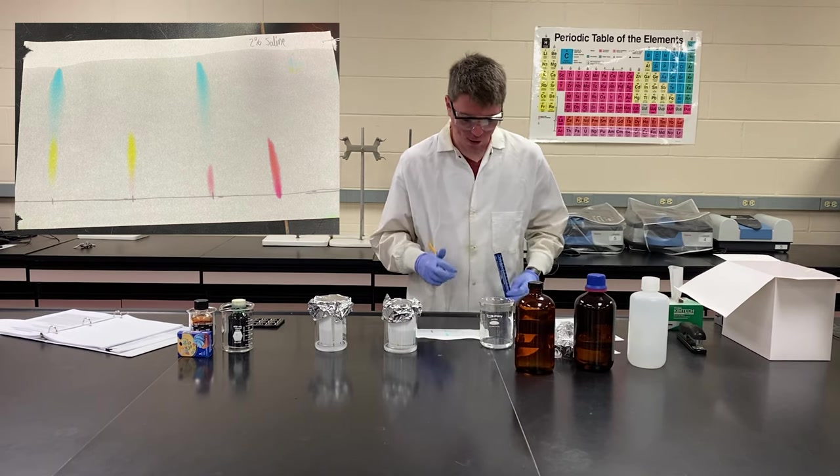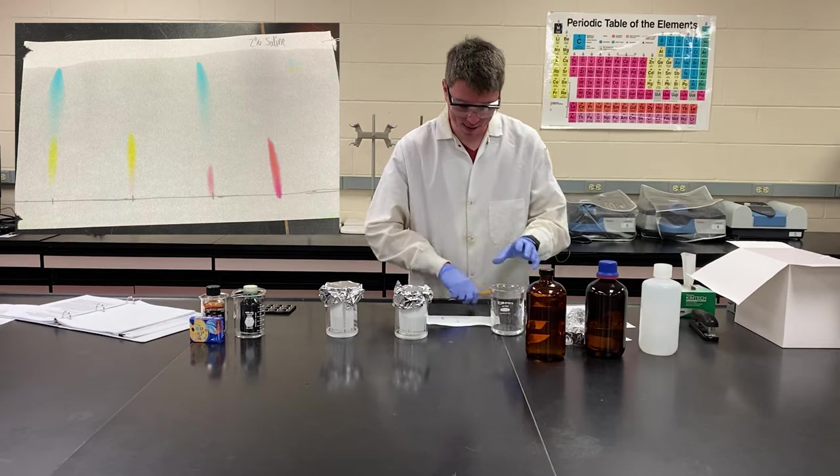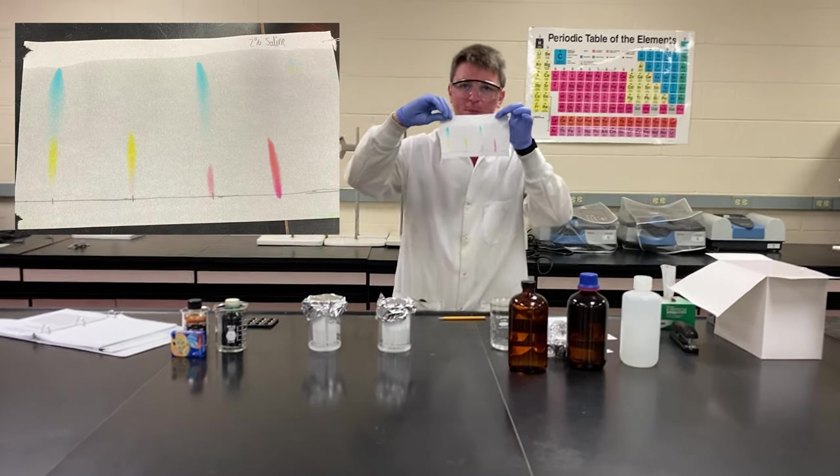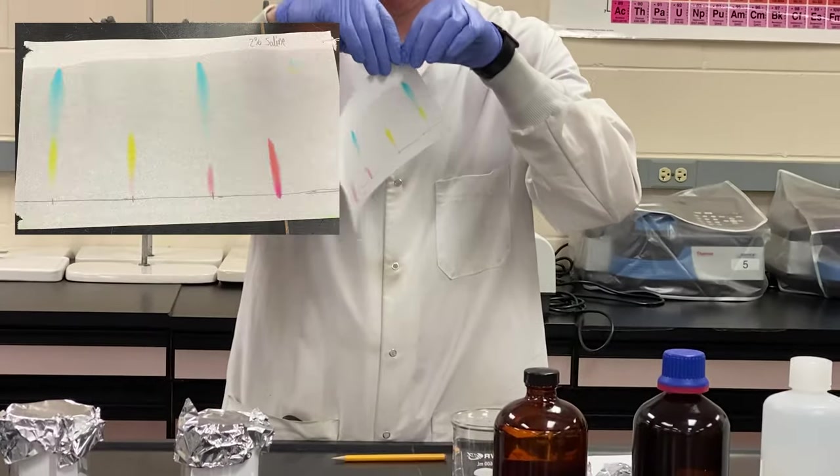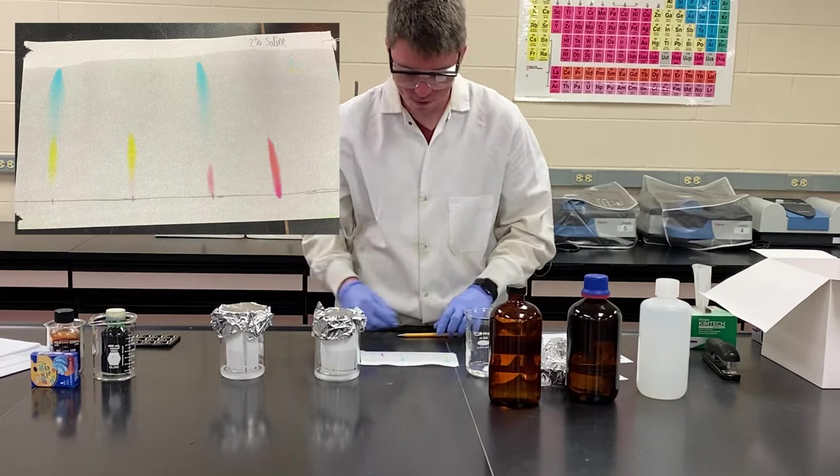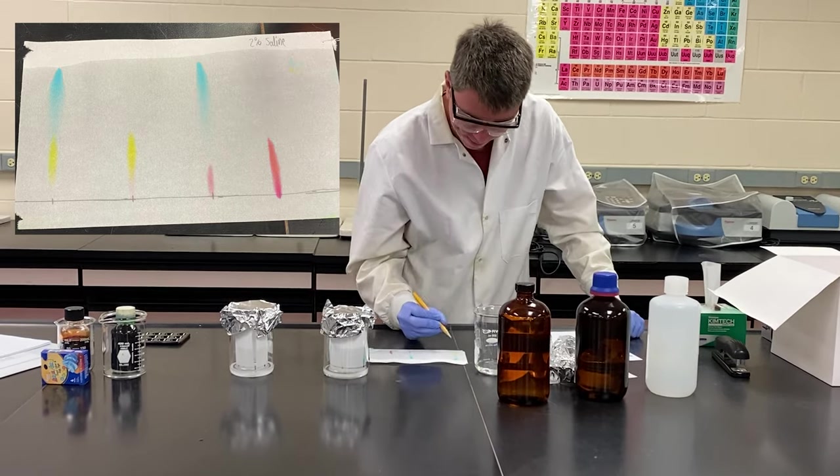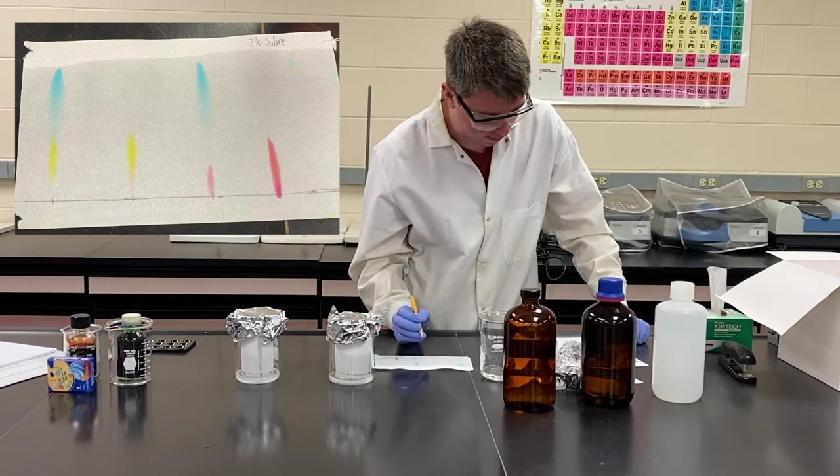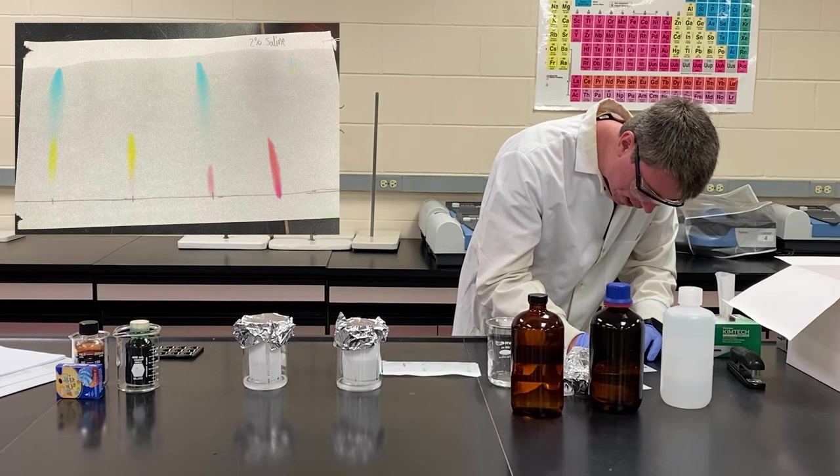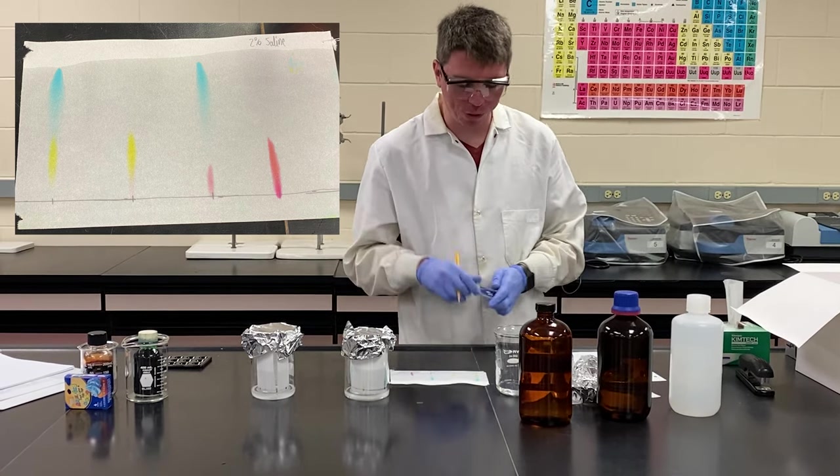So all of your measurements are going to start from your marked baseline where your dot was spotted. And many of these have split into multiple components. So this is where you want to make sure you know what sample you have where. So I probably should have marked these before I put them on, but that's fine. I know what order these are in. So for example, green, because it has split into yellow and blue pigments, I need to measure both RF values.